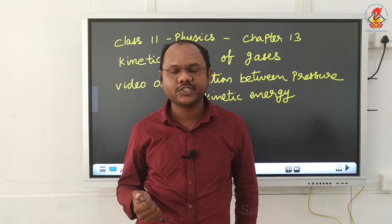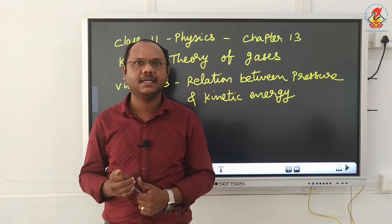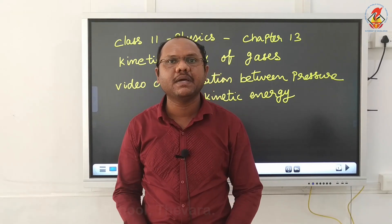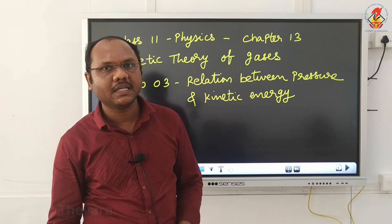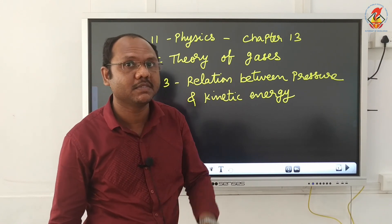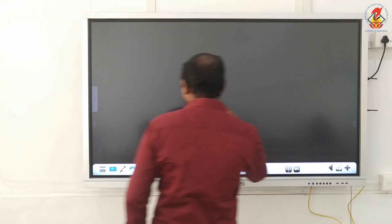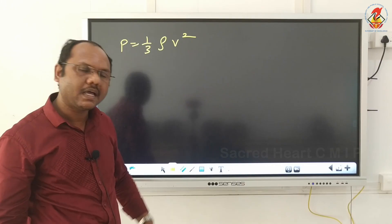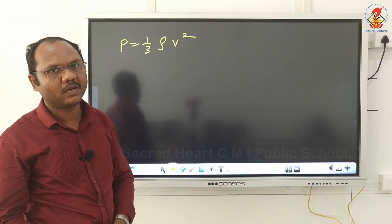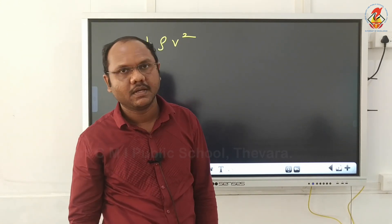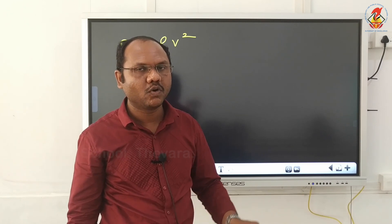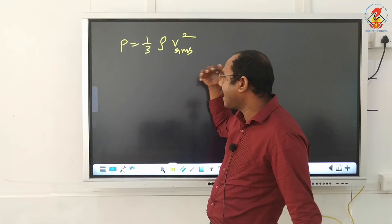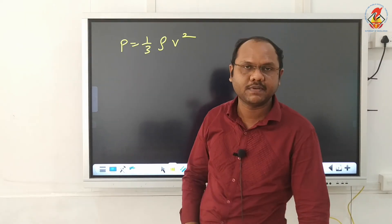Good morning students. In the last section we talked about the postulates of kinetic theory and we said the gas exerts pressure on the walls of the container. The equation for pressure is P = 1/3 ρv², where v is the RMS velocity. From now on, simply writing v² means it is v_rms² itself.